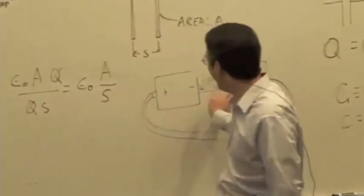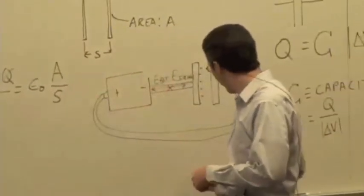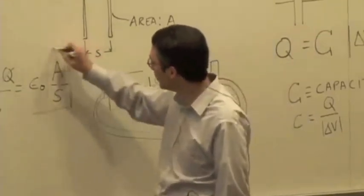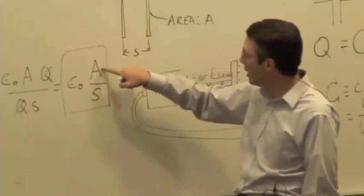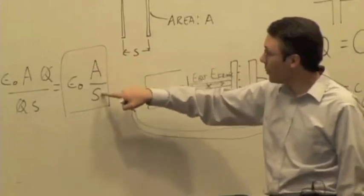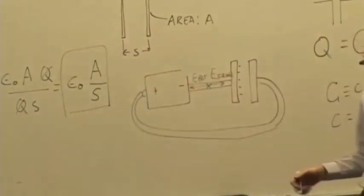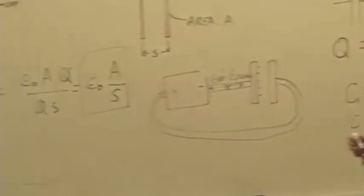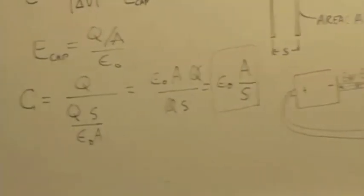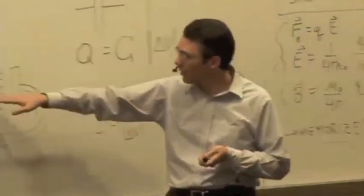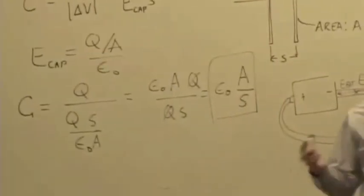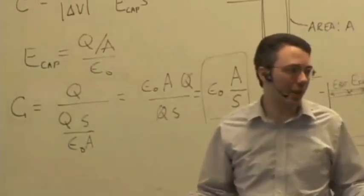Arguing from the fringe field is consistent with arguing using capacitance: the bigger the area, and also reducing the gap size would reduce the fringe field, which would increase the capacitance and lead you to store more charge on the capacitor given the same potential difference. In one case we argue in terms of field and fringe field; in the other we argue in terms of capacitance and change of potential. We get the same result.